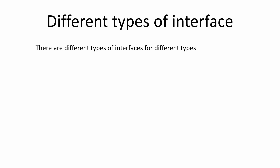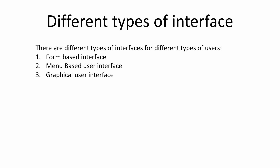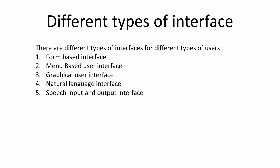There are around seven interface types present in DBMS. The first one is form-based, second is menu-based, third is graphical user interface, fourth is natural language interface, fifth is speech input and output interface, and so on up to seven total. You don't have to worry - they're pretty straightforward, and if you remember the examples, it will be easy to remember all seven.